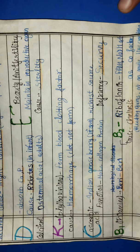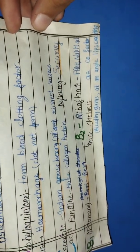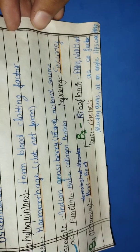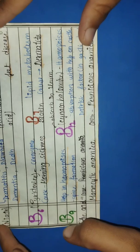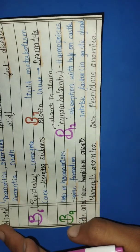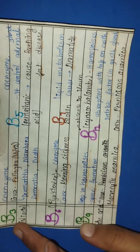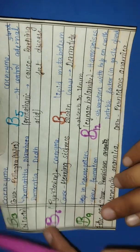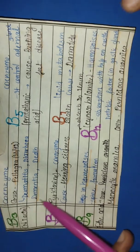Now we see vitamin B3, which scientific name is Niacin. Because of this we have skin problems. Dermatitis, which means skin disease, is caused by B3 deficiency.